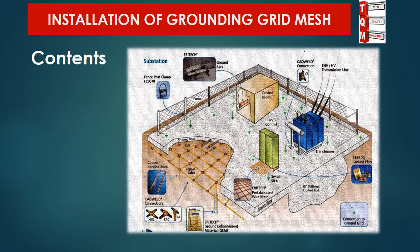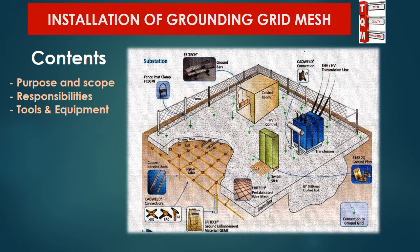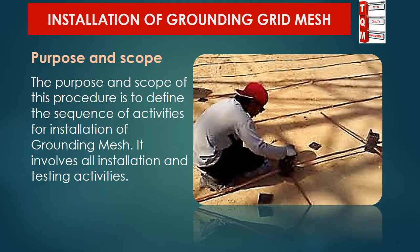We will cover the following contents in this video: purpose and scope, responsibilities, tools and equipment, installation procedure, and testing procedure. The purpose of this method statement is to facilitate the execution and quality team to correctly perform this activity at site. The scope of this procedure is to define the sequence of activities for installation and testing of grounding mesh.